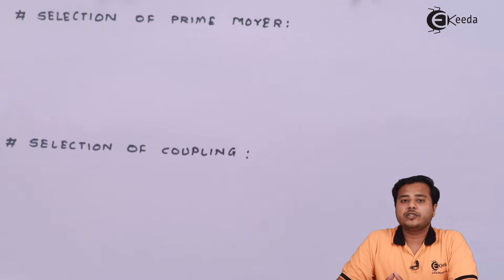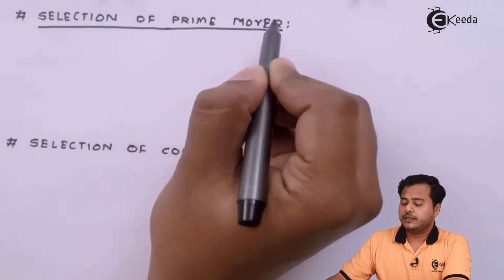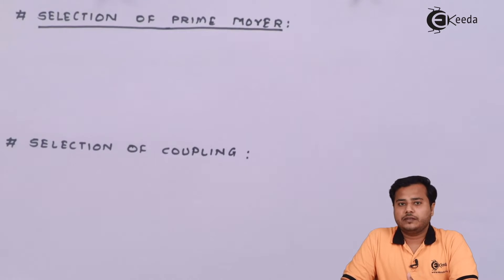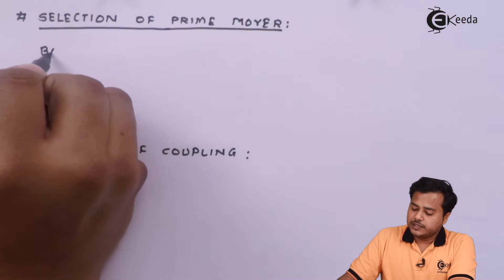Like I said, prime mover can be anything. It can be an engine. It can be an electrical motor or any other source that can drive a given output shaft. So based on, let me write it.